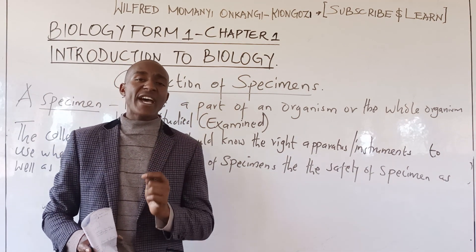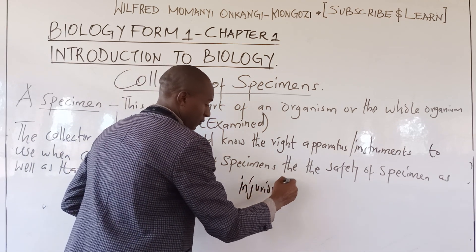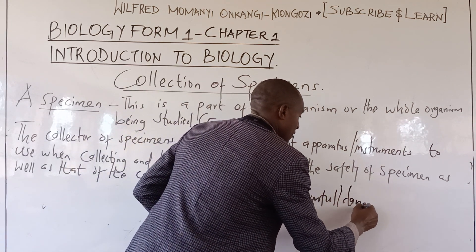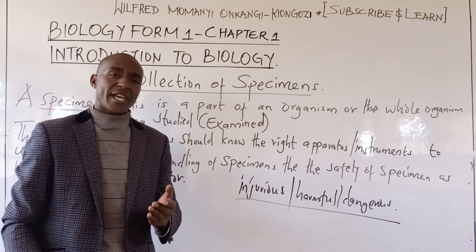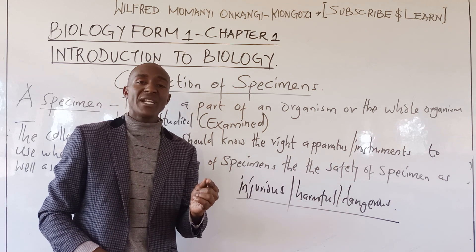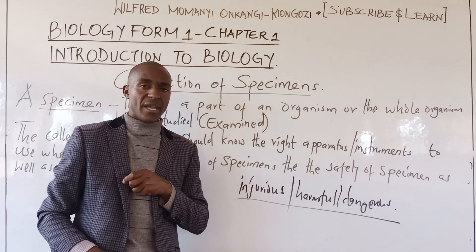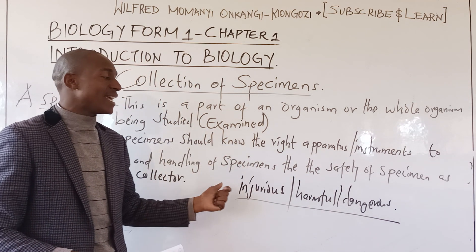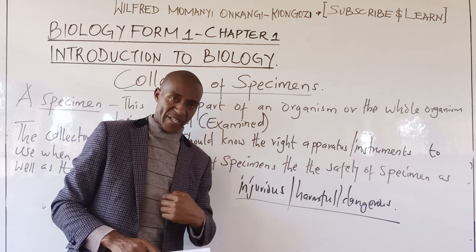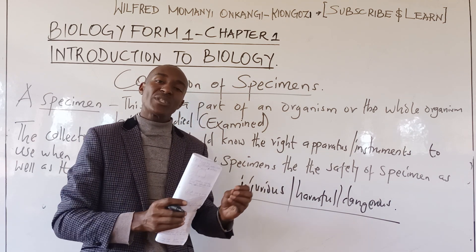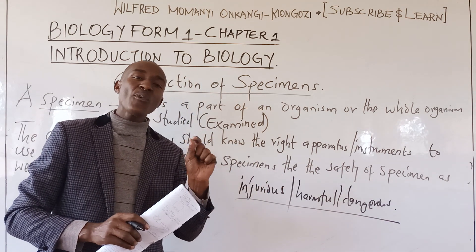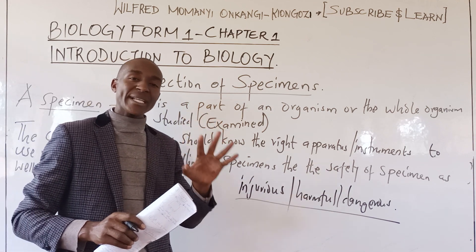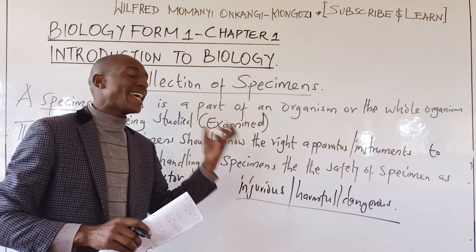Remember, some specimens are injurious — that is, harmful or dangerous. For example, if you want to use bees, this is a very dangerous specimen that can sting you, so you must use the right tools to collect and handle it. If collecting a stinging nettle, which is also very injurious, you must use correct apparatus. The specimen must always remain in its natural state before study or examination, because any distortion makes it difficult to examine.